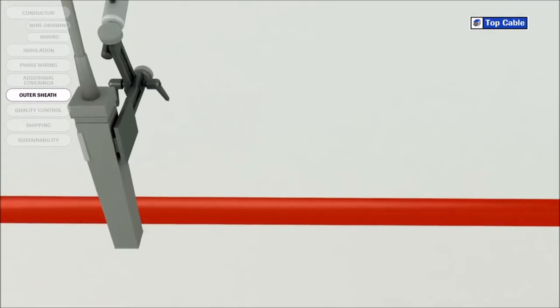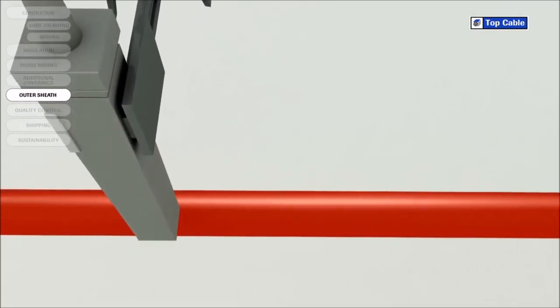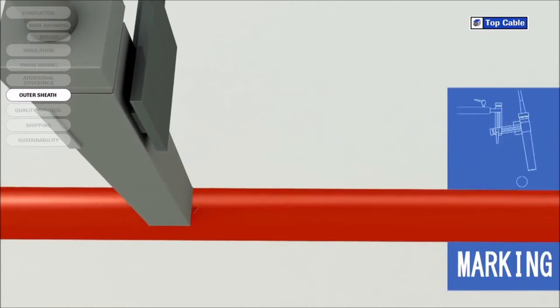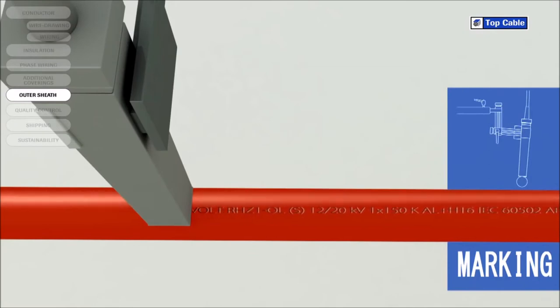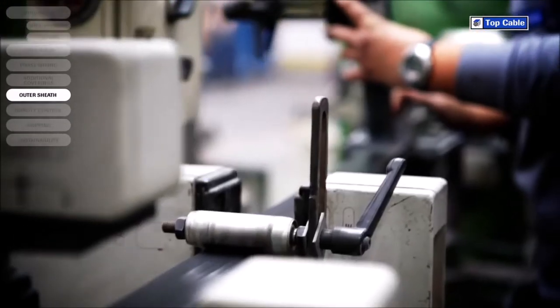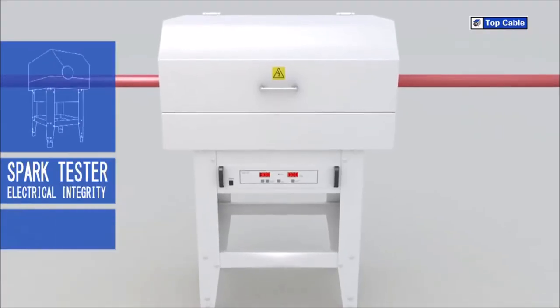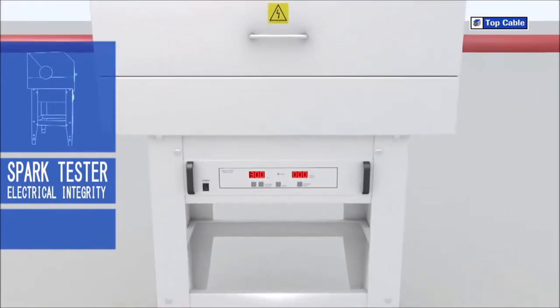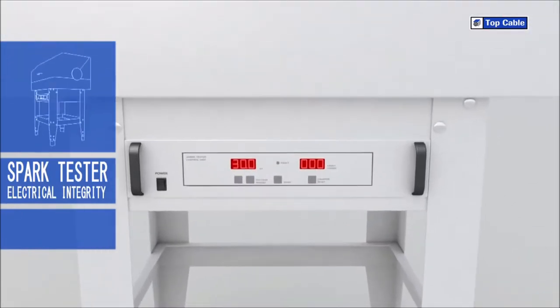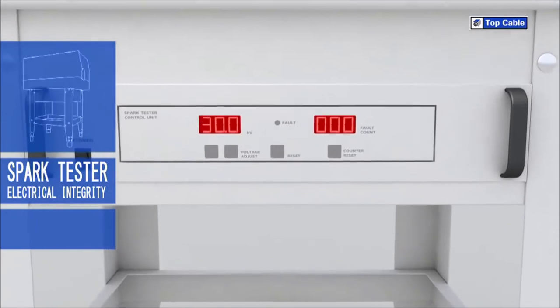So that all Top Cable customers can correctly identify their cables, the cables are marked with the most important information: manufacturer, trade name, cable name, number of conductors, cross section, construction regulation and standards, CE marking, and other information of interest such as the product's certification. There is also a meter by meter mark on the cable to help our customers with their stock control.